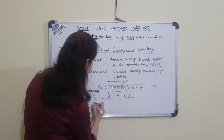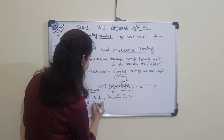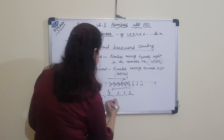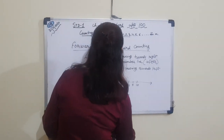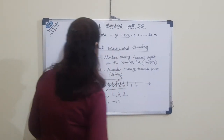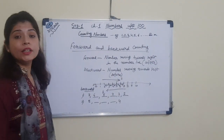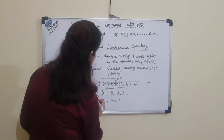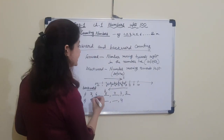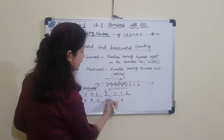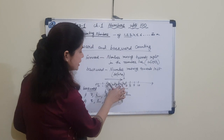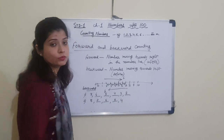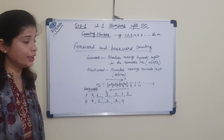Starting from 8 in backward form: 8 minus 1 is 7, 7 minus 1 is 6, 6 minus 1 is 5, 5 minus 1 is 4 — which is already given here.